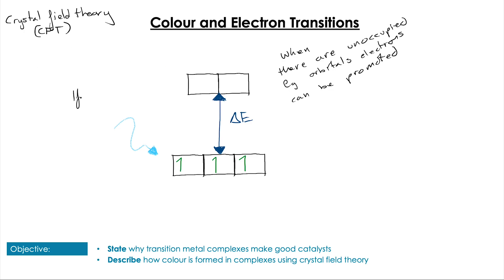If we take a complex that has a certain value of delta E and has some electrons in the lower energy t2g orbitals and some space up in the higher energy eg orbitals, when there is space in these high energy eg orbitals, there can be promotions of low energy electrons up into those orbitals. It's those promotions—those transitions—which are going to be key to the color that we observe.